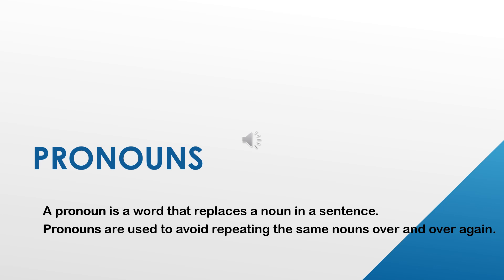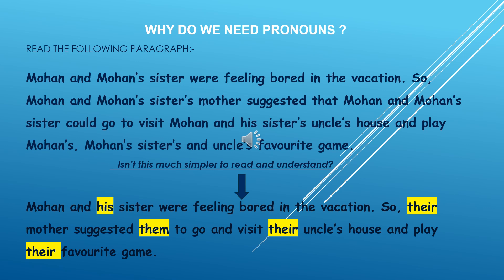Let us see a sentence in which we are going to use only nouns and no pronouns — how does it look? Here I have a paragraph for you which has no pronouns. Let us read and feel how it sounds. Mohan and Mohan's sister were feeling bored in the vacation, so Mohan and Mohan's sister's mother suggested that Mohan and Mohan's sister could go to visit Mohan and his sister's uncle's house and play Mohan's, Mohan's sister's and uncle's favourite game.